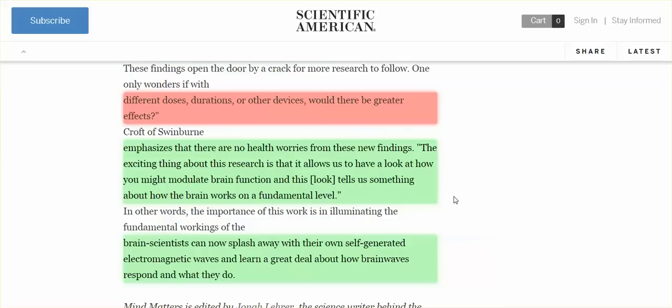The exciting thing about this research is that it allows us to have a look at how you might modulate brain function. And this look tells us something about how the brain works on a fundamental level. Brain scientists can now splash away with their own self-generated electromagnetic waves and learn a great deal about how brain waves respond and what they do. Well, splashed away they did and they know how our brain waves are working and they are using frequencies to control our brains.